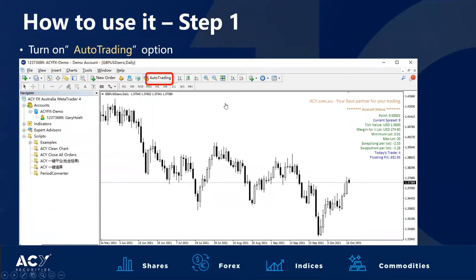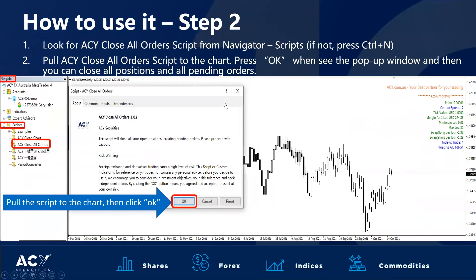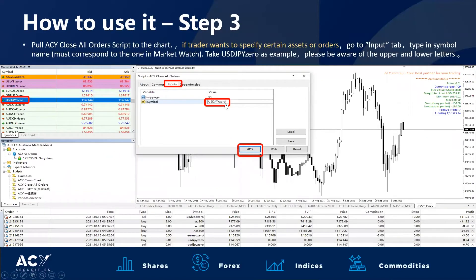Using the Close All Orders is quite simple. I'm going to break it down in a live demonstration towards the end, but simply what we will have to do is ensure that we have our auto trading turned on. From there we need to open up our navigator and go to scripts. From there we can grab the ACY Close All Orders under our scripts and drag it into the middle of our chart. Once we click OK, we will then be able to close out all the orders.